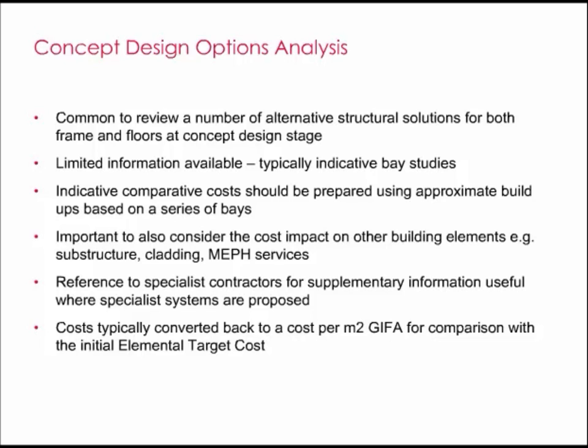The different bay study options can include reinforced in-situ concrete, post-tension concrete, precast concrete, timber, and structural steelwork, and a number of sub-options for each type of material, including different floor types. Often, the number of options to consider can be between 5 and 10, although it is good practice to reject options if initial considerations prove that they are unworkable or will be uneconomical — for example, larger spans using reinforced in-situ concrete that will result in prohibitively large members. Comparative cost studies are prepared on an elemental basis of the component parts of the frame and upper floors using approximate quantities and typical rates. This should also include an allowance for the method of providing lateral stability — bracing or shear walls. It is important to also consider the cost impact on other building elements, for example the substructure, cladding, and services installation.